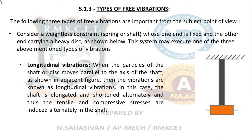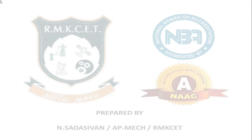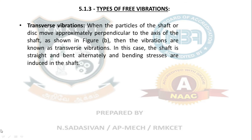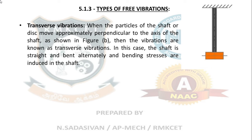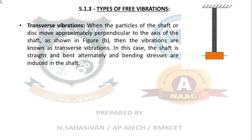First type is longitudinal vibration. Next type is transverse vibration: when the particles of a shaft or disc move approximately perpendicular to the axis of the shaft, the vibrations are known as transverse vibrations. The example is a normal cantilever deflection — the same cantilever drawn upside down. If you put a force on the tip of the cantilever, it deflects downwards or upwards. That is transverse vibration.